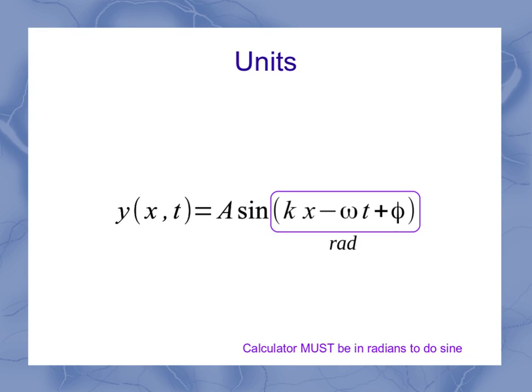So that means when I do the sine calculation here, I've got a number that's in radians, and my calculator has to be in radian mode to do the sine. But once it's done the sine of that number in radians, there's no units on it anymore. Sine is a dimensionless, unitless type of quantity.